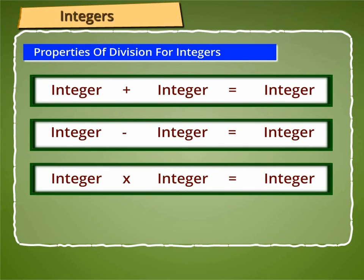Similarly, if any two integers are multiplied, the result is an integer. Now, let us see, if an integer is divided by a non-zero integer, will the quotient be always an integer?